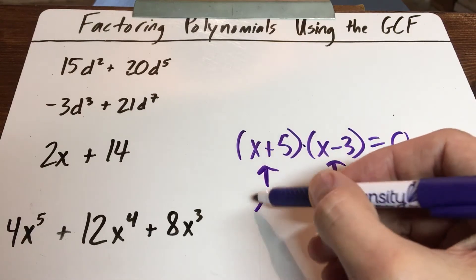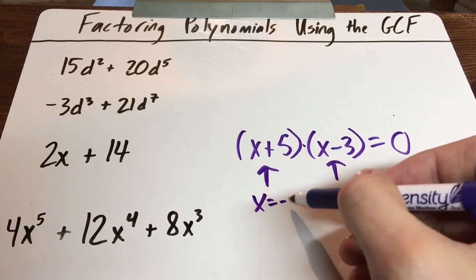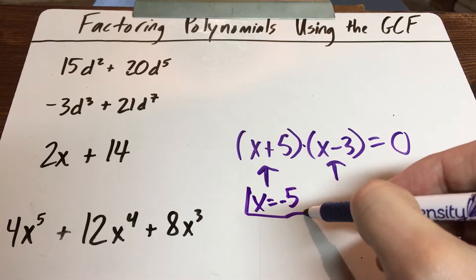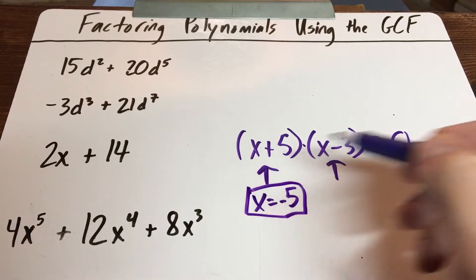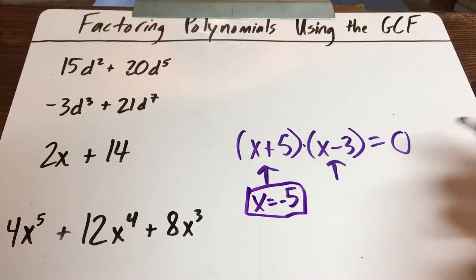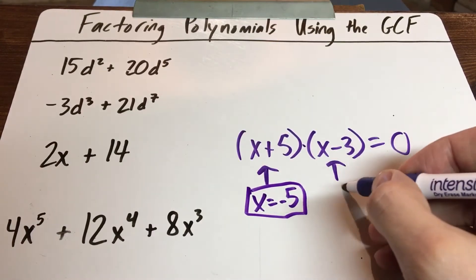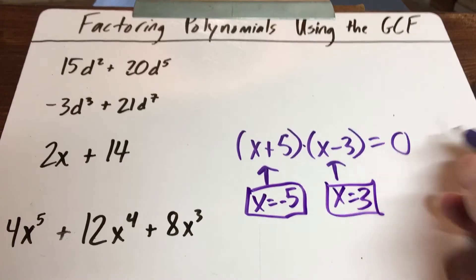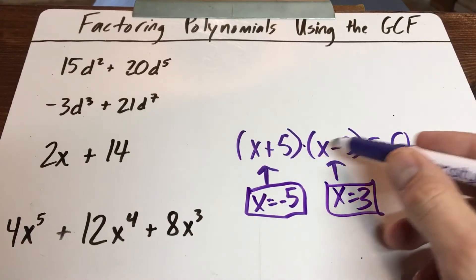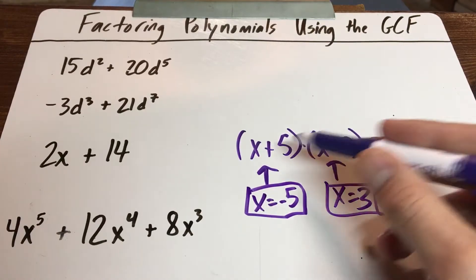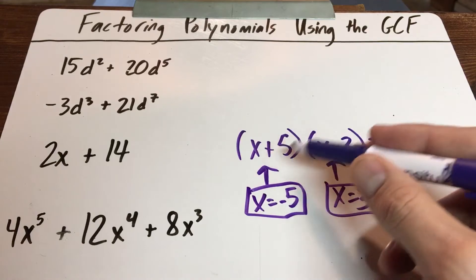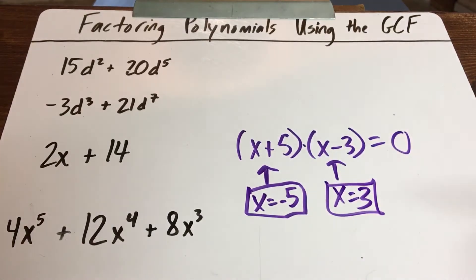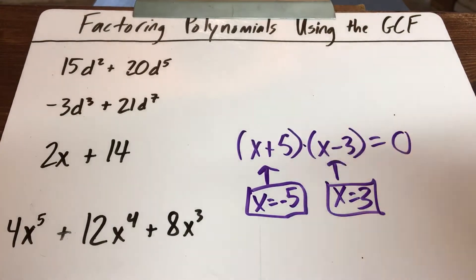So in this example, if x equals negative five in this parentheses, we could have an answer of zero because it would be zero times whatever. And over here, if x equals three, then the whole thing would equal zero because it would be three minus three, which is zero, and zero times eight—because three plus five is eight—equals zero. So that's what we talked about yesterday.